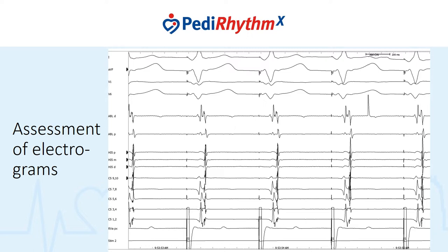Careful assessment of electrograms is part of the deal. If one recognizes this as ventricular pacing with retrograde conduction up an accessory pathway, on the ablation catheter we have a very appetizing signal here — a nice V, a nice A of about equal size, and a tiny little electrogram in the middle which might or might not be an accessory pathway potential. A lot of times it isn't so much the mapping, although that's important, but also the critical assessment of the electrograms that guides us in terms of what our target should be.